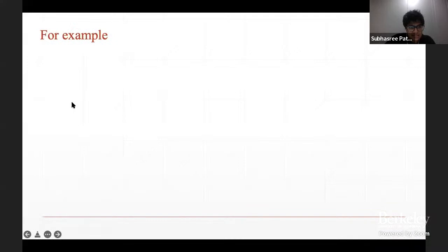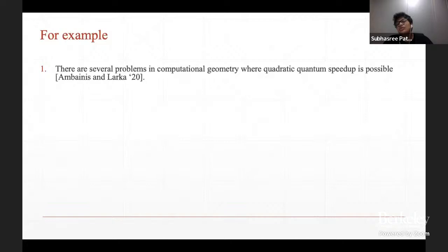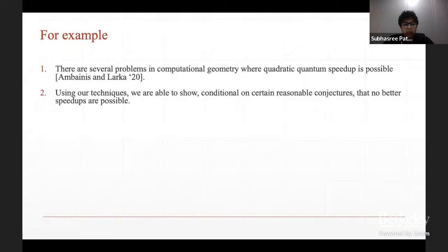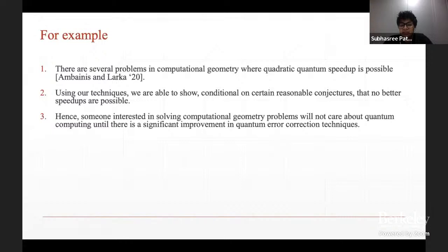For several computational geometry problems, a true quantum speedup was shown to be possible — this was a paper by Ambainis and Larka. In our paper, conditional on some conjectures, we show that these speedups are the best possible for these computational geometry problems. For people interested in implementing these quantum algorithms on quantum computers, this demonstrates it will not be helpful in the near-term future.